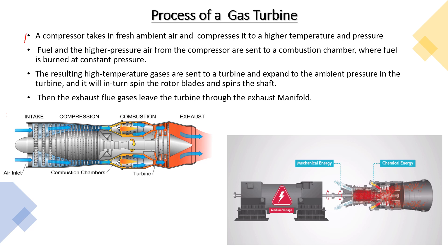The working principle has three steps. First, the compressor takes in fresh ambient air and compresses it to a higher temperature and pressure. Second, fuel and high-pressure air from the compressor are sent to the combustion chamber, where fuel is burned at constant pressure. Third, the resulting high-temperature gases are sent to the turbine, expand to ambient pressure, and spin the rotor blades and shaft.